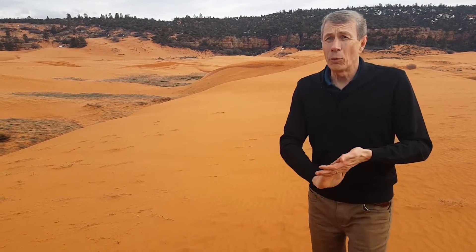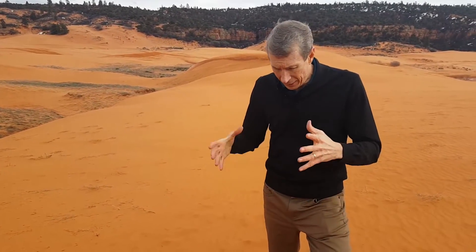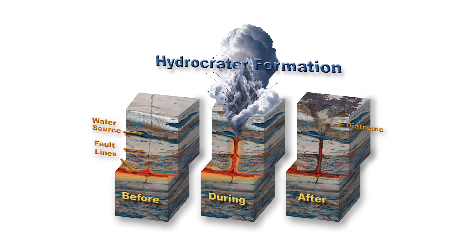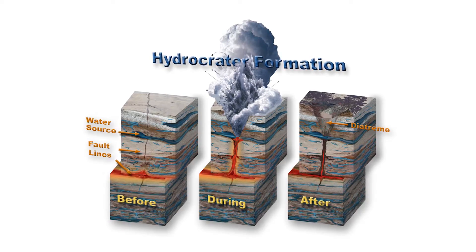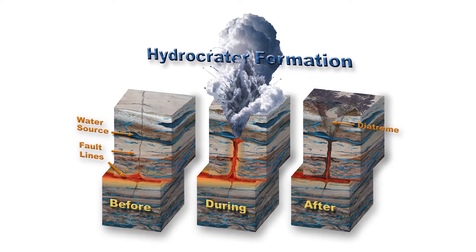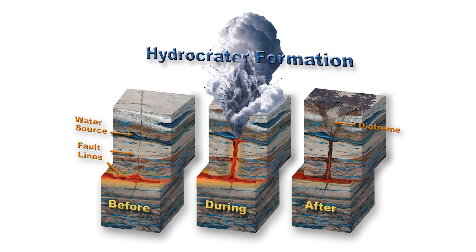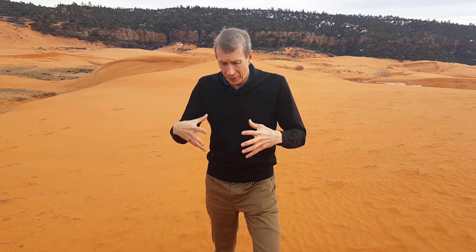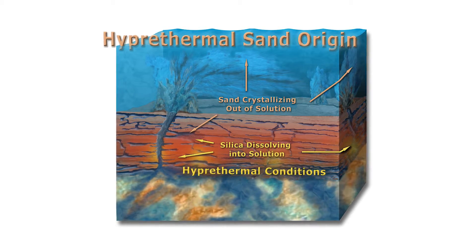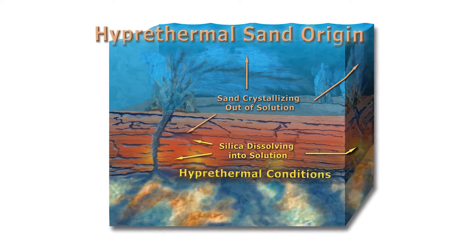The other way that sand could be formed is in a diatreme. There are pipes underneath the ground, and these are all over the world. The hydrofountains discussed in the hydroplanet model and the universal flood chapter go into great detail describing how in these diatremes and pipes you have the same hyperthermal conditions that quickly form sand — again, in minutes. Once they're formed and growing, they're shot out in the fountain onto the surface like this.